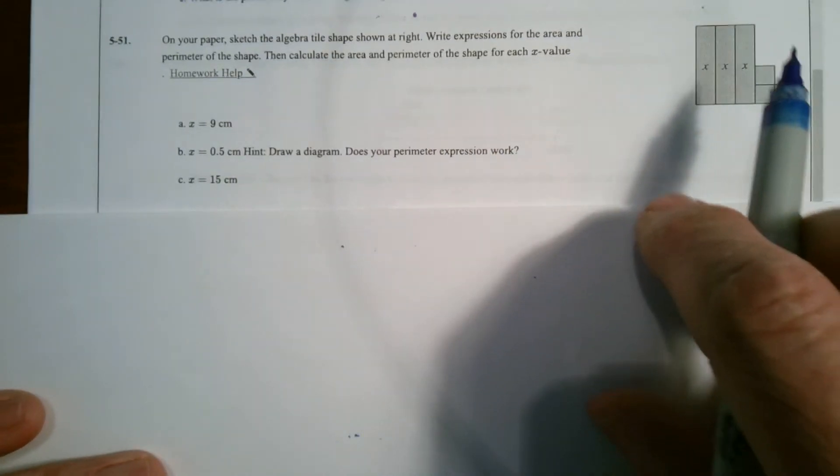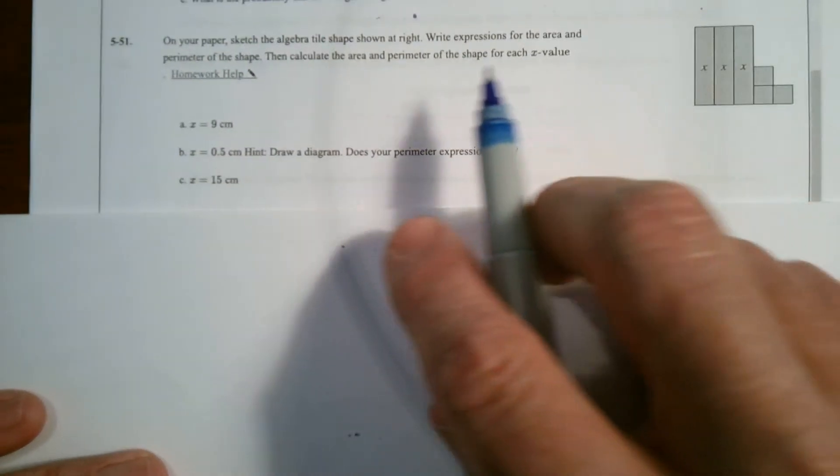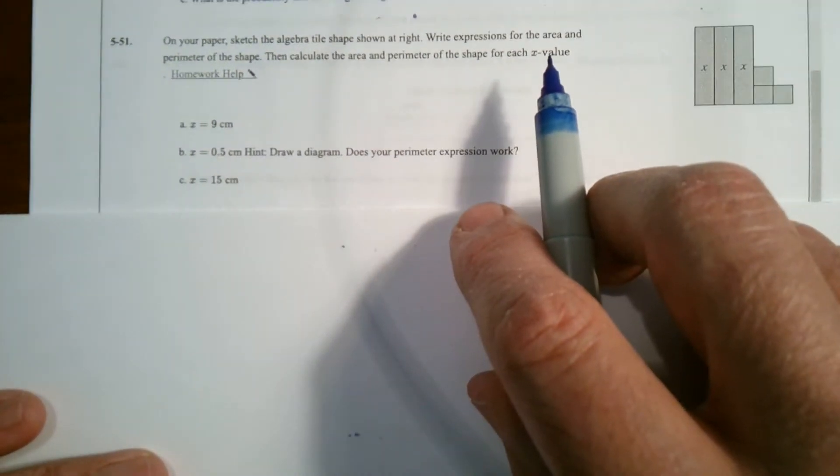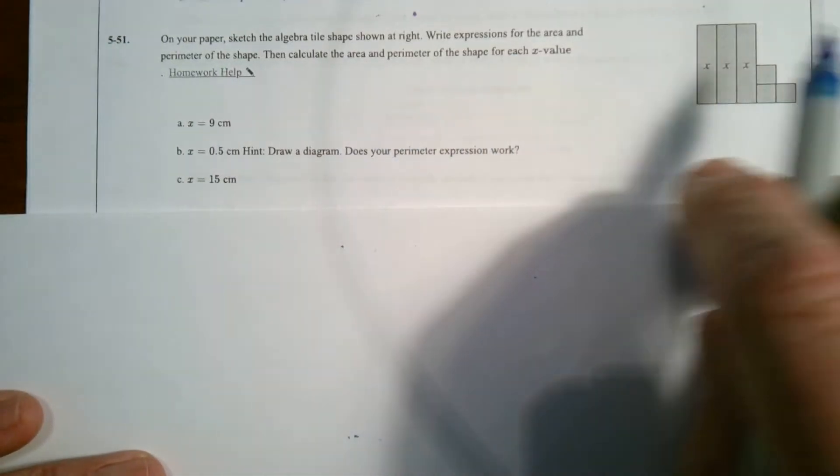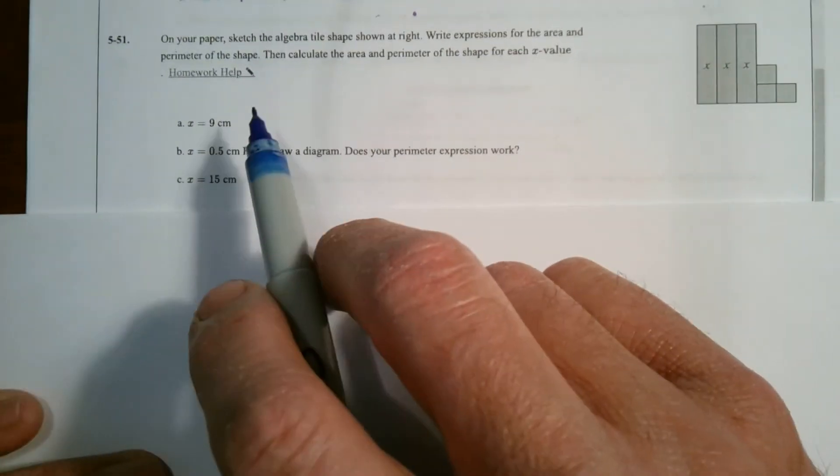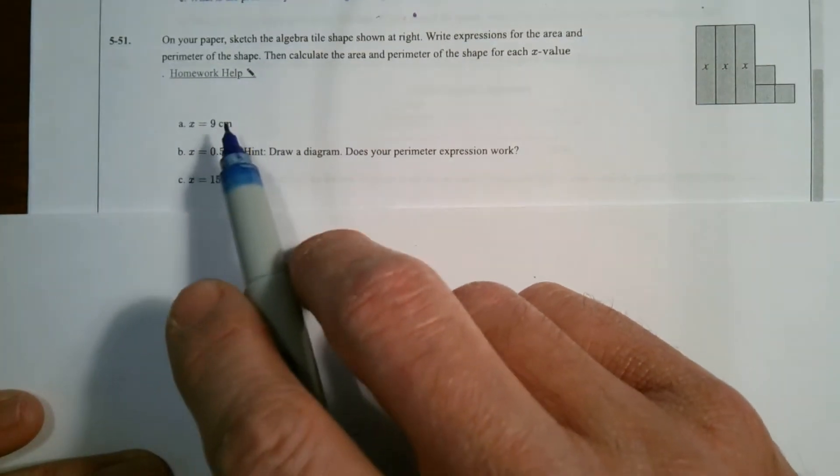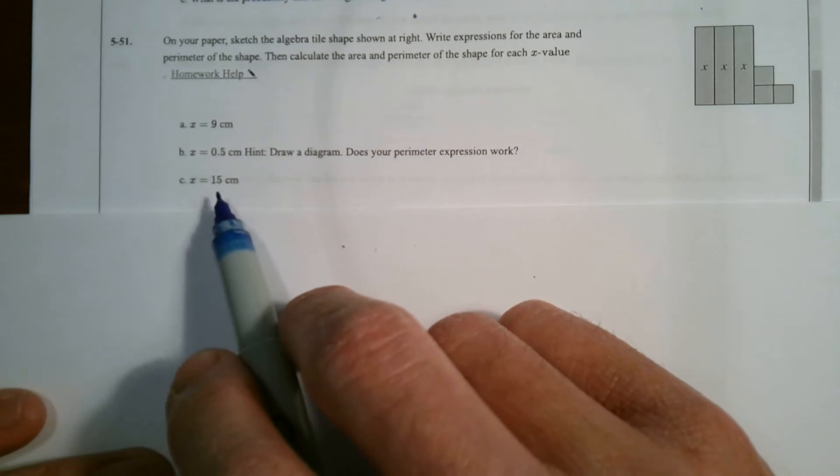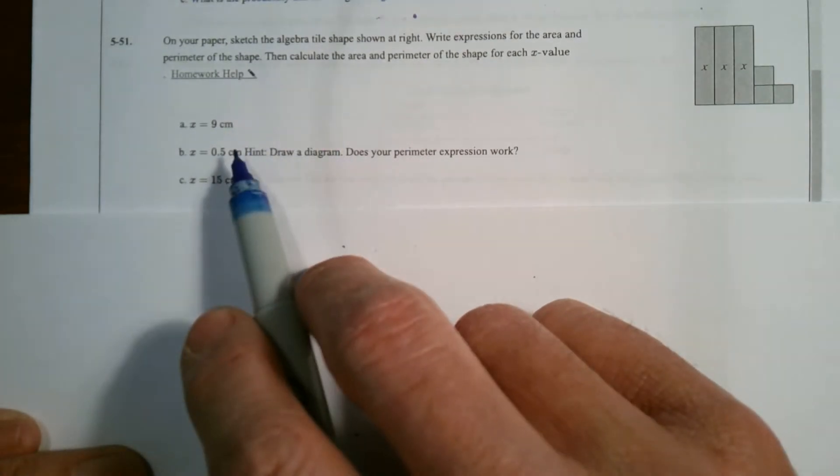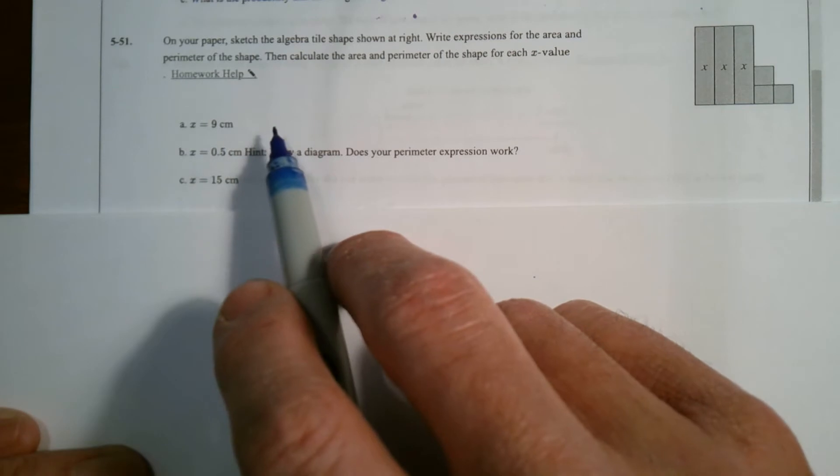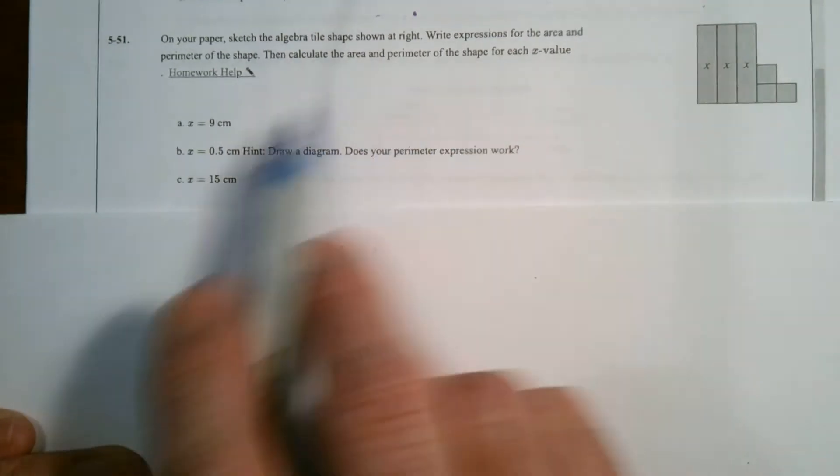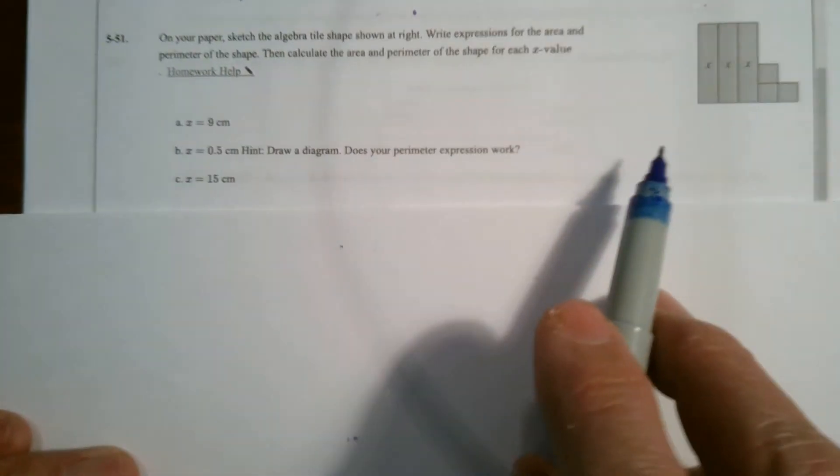So we could utilize them and find the expression. We want to write expressions for area and perimeter of algebra tiles, and then utilize given values to calculate the actual areas and perimeters based on those given values.